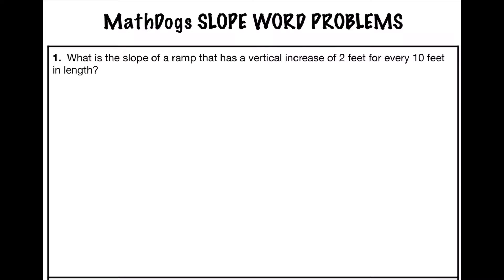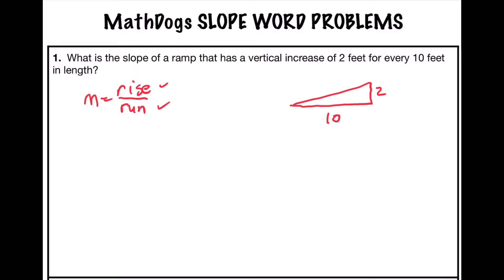Problem number one says, what is the slope of a ramp that has a vertical increase of two feet for every ten feet in length? We're going to use the definition of slope as rise over run. The letter M is used to represent the slope. The rise is the vertical change, and the run is the horizontal change. For every ten feet in length on the ramp, there's a rise of two feet. The rise is two feet and the run is ten feet. If I reduce the fraction two over ten, dividing by two over two, I get one-fifth, or 20%.